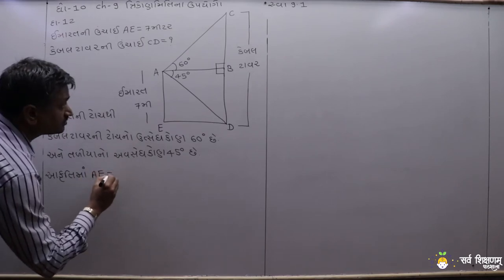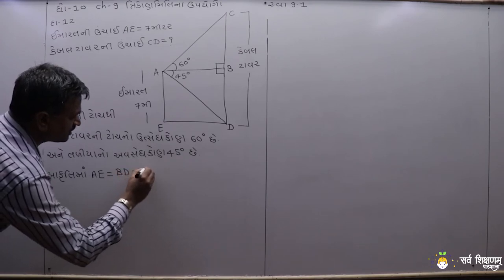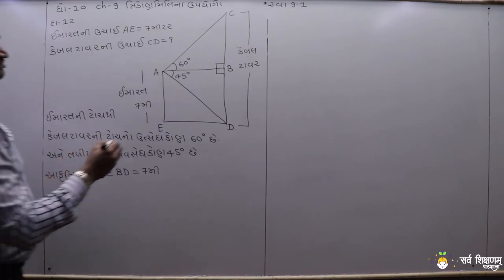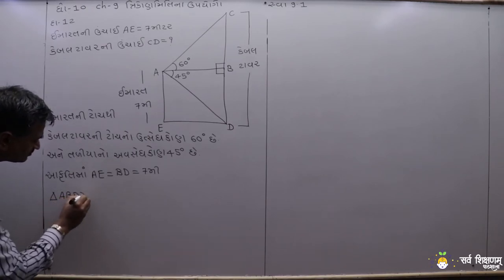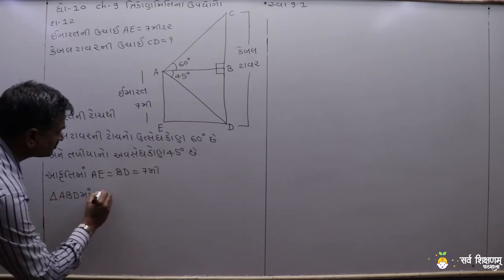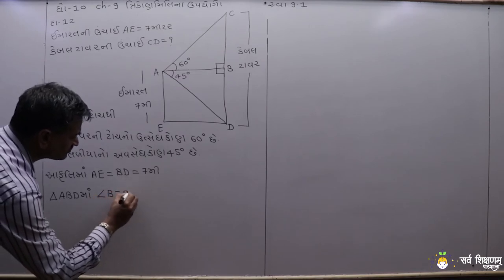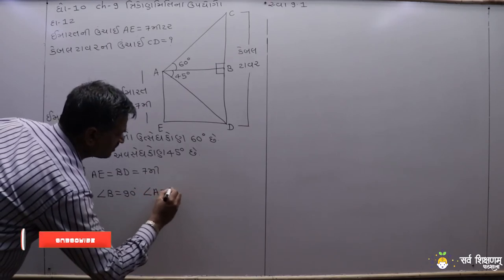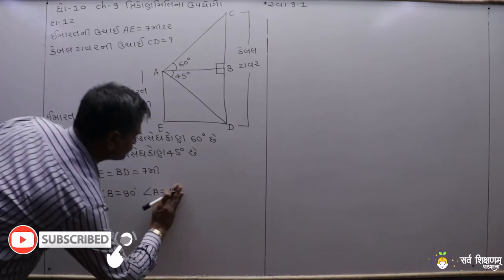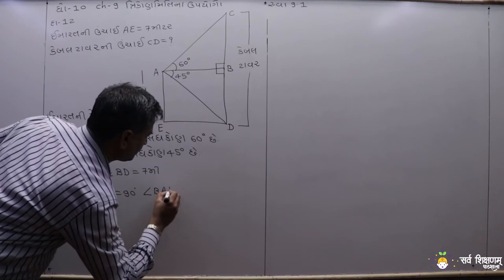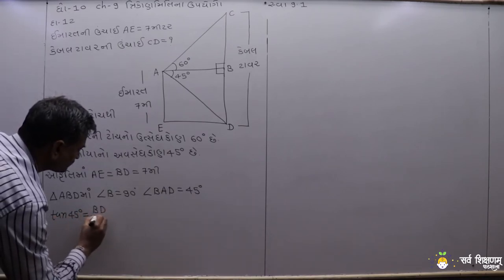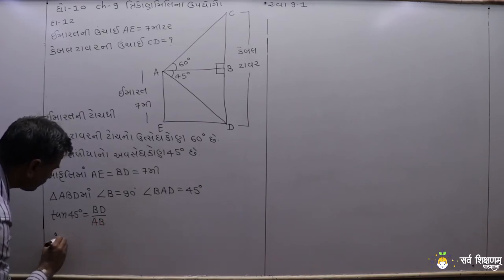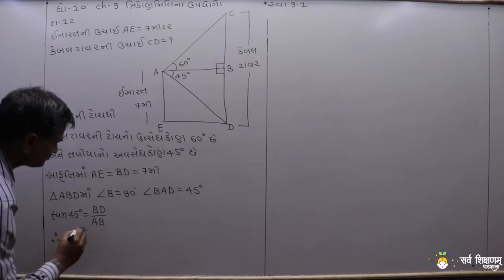This e is equal to bd, which is 7 meters. We write bd together; bd equals 7, and bd equals 3 equals 7.